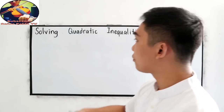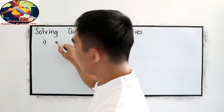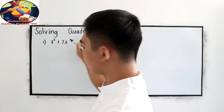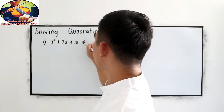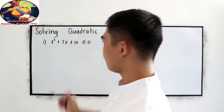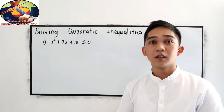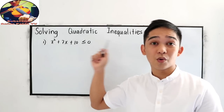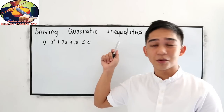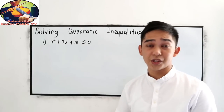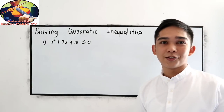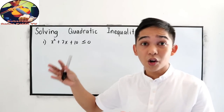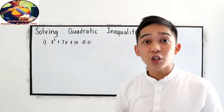Let's say we have problem number 1: x squared plus 7x plus 10 is less than or equal to 0. So if it is equal to 0, that is easy because we already discussed that in our equation. But if we have less than or equal to 0, just like solving a quadratic equation, we're going to factor our trinomial.